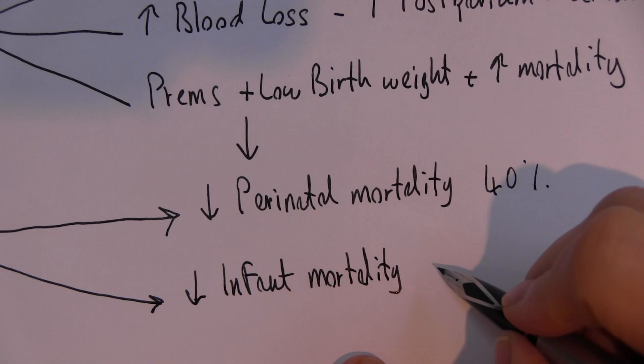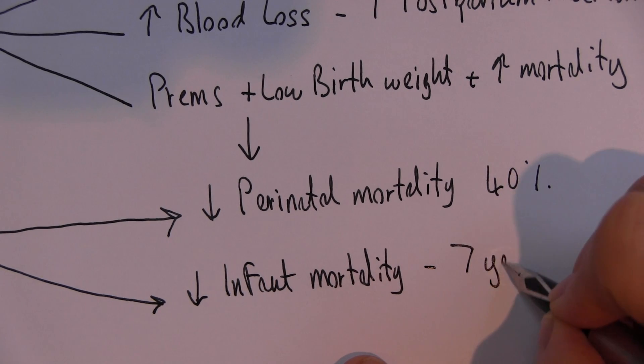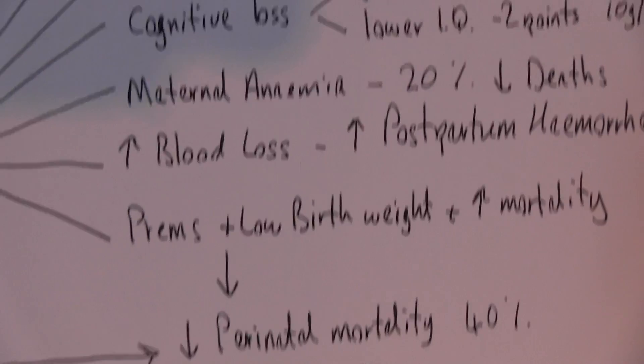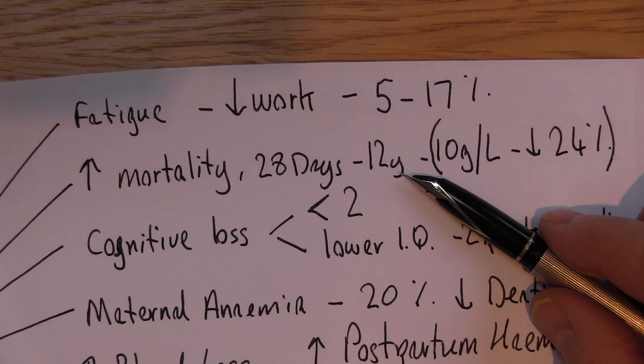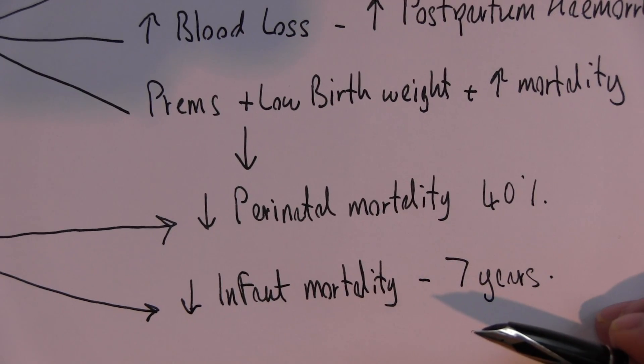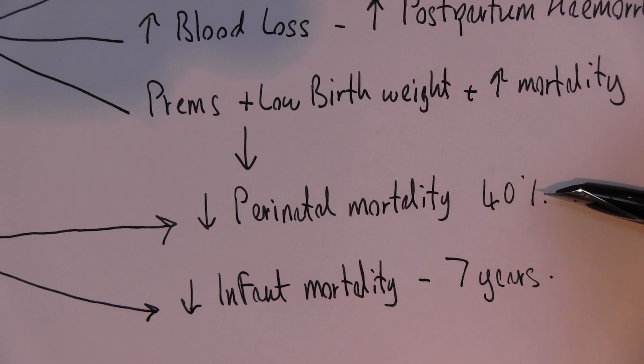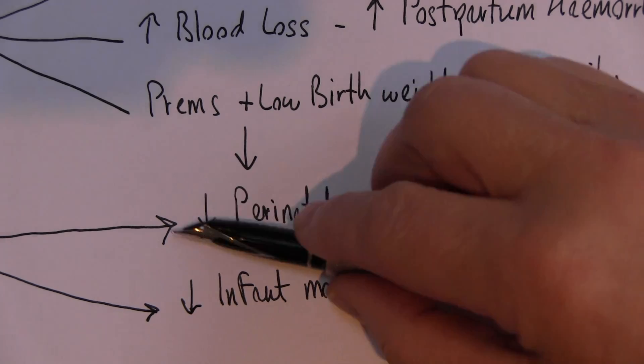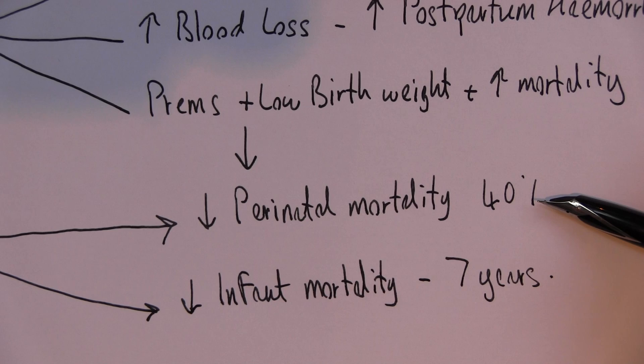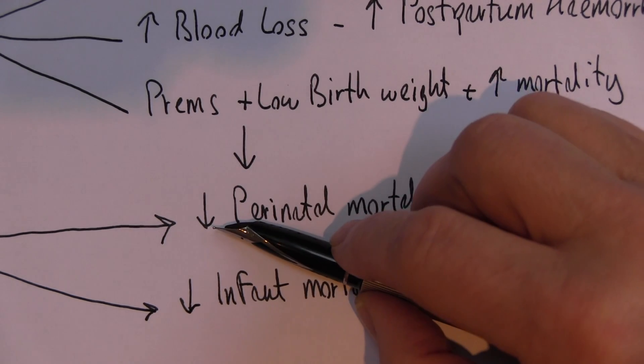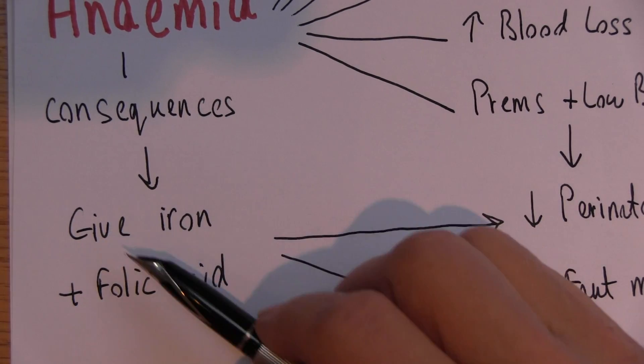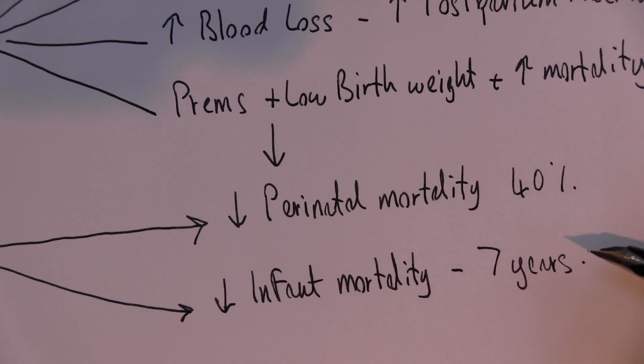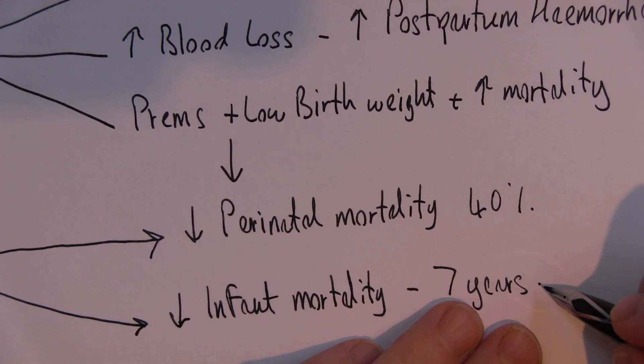And studies have also shown reduced infant mortality for the first seven years of life, from birth to the first seven years. Although of course, other studies have shown that mortality is reduced if we treat anemia for the first 12 years of life. So by treating anemia in pregnancy, the earlier the better, we can reduce perinatal mortality by 40% and infant mortality in the first seven to twelve years.